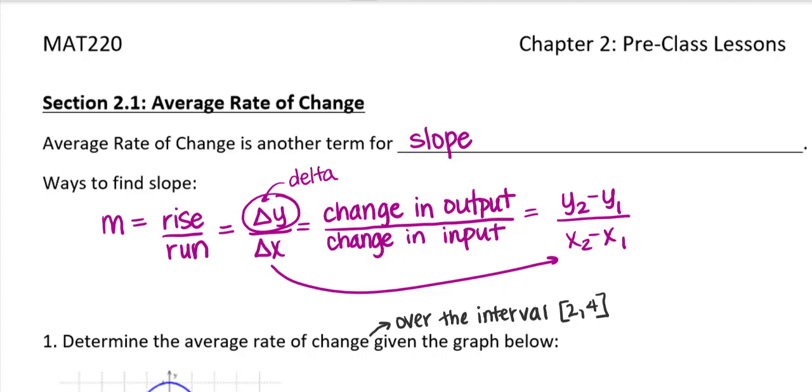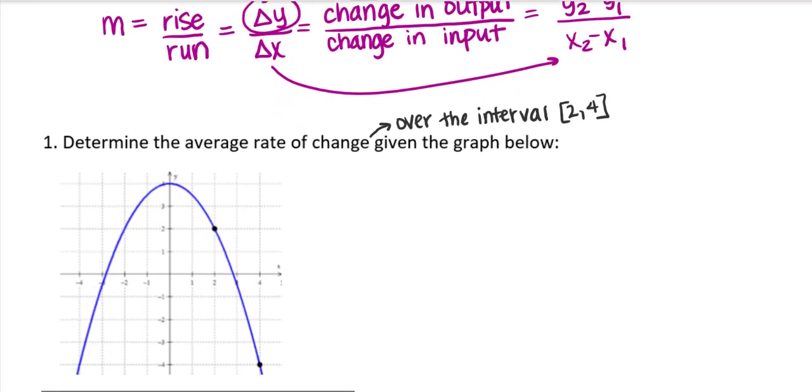But average rate of change being slope, or the measure of how a function is changing according to its input, which could be over a time interval. So let's take a look at a few of these examples. So here's the first one.